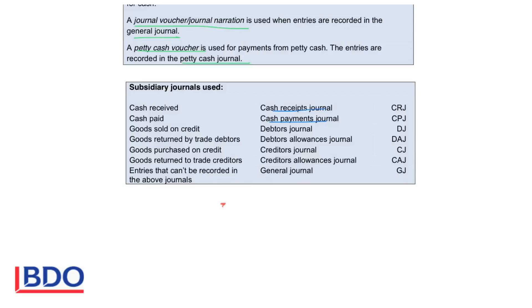When goods are sold on credit it will be recorded in the debtors journal. When debtors return goods it will be recorded in the debtors allowances journal. When you purchase goods on credit it will be recorded in the creditors journal, and when your account is reduced by the creditors it will be recorded in the creditors allowances journal. Any entry that doesn't fit into one of these journals will be recorded in the general journal.